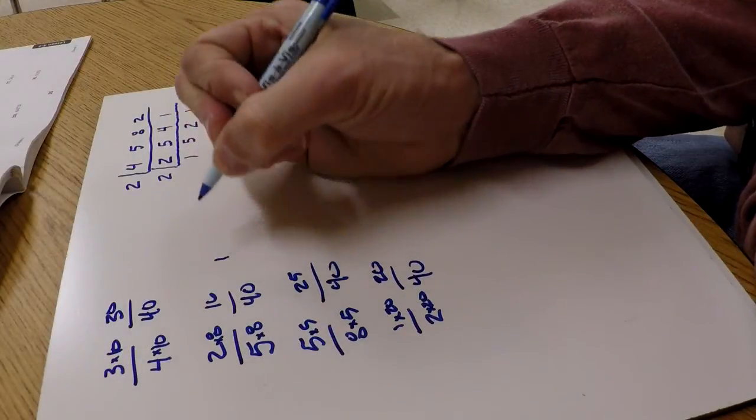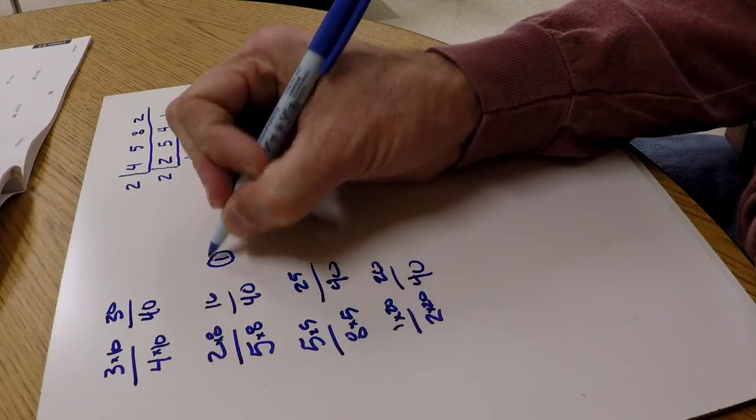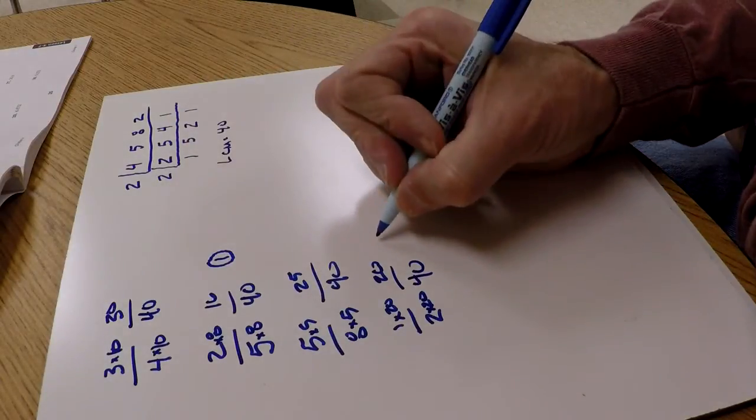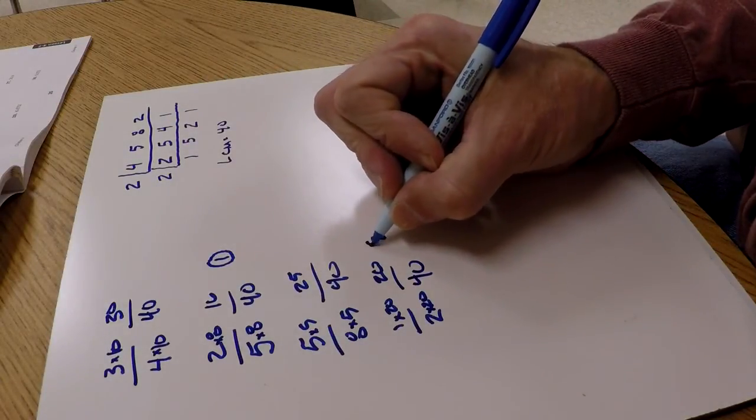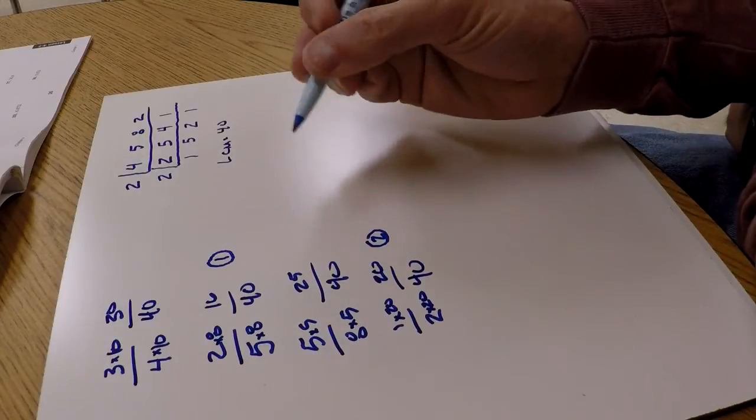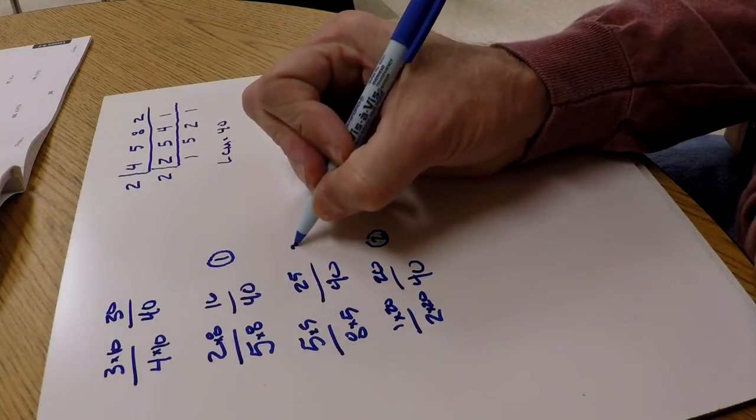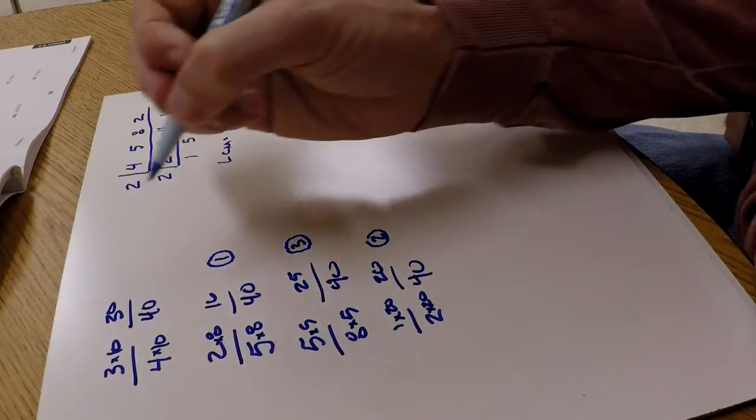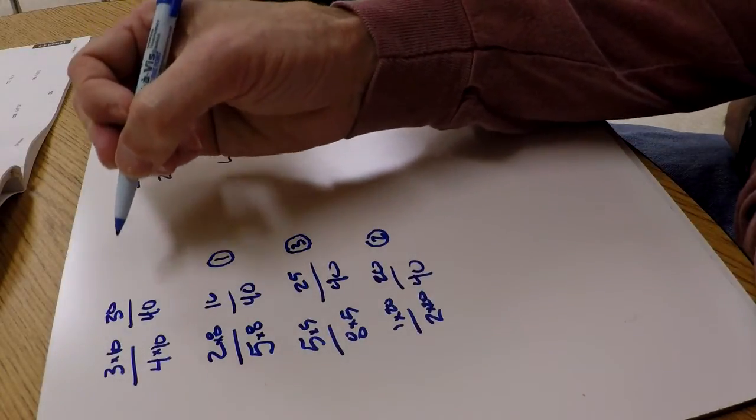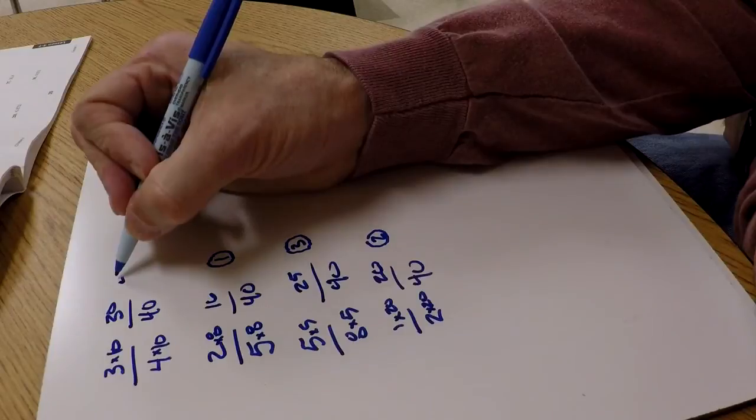After that we have a 20, and then we have a 25 as a numerator, so that came in third place, and then we have a 30 which is the largest number and it's going to come in last place.